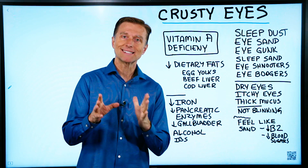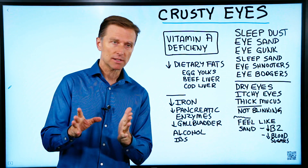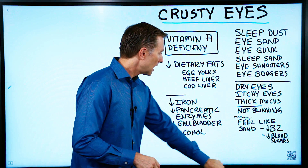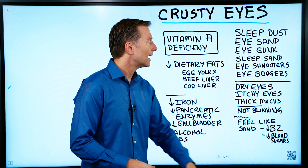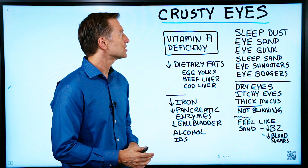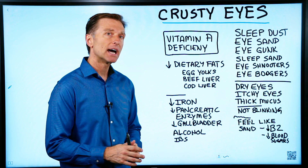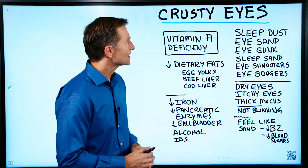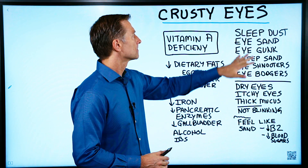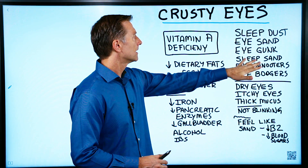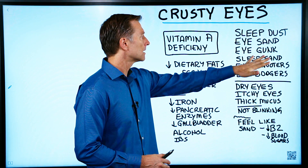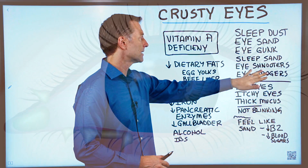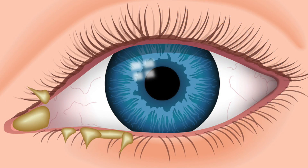Someone wanted to know about crusty eyes — we're going to talk about that. There are some medical terms for crusty eyes: sleep dust, eye sand, eye gunk, sleep sand, eye schnooters, or eye boogers.